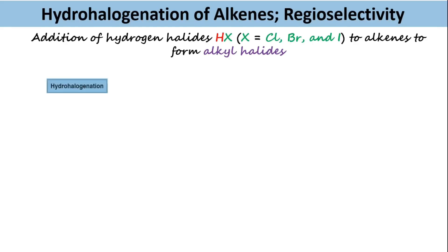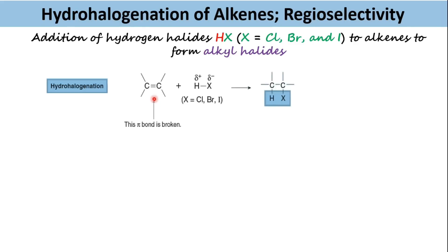Consider this general reaction of hydrohalogenation of alkenes. As can be seen here, two bonds are broken in this reaction: the weak pi bond of the alkene and the HX bond of hydrogen halide. In the product, two new sigma bonds are formed, one to H and one to halogen.